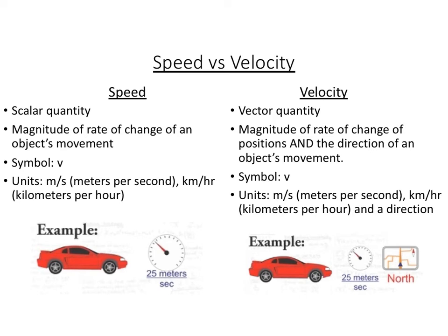Okay, so here's a comparison of speed and velocity. You see they both have a magnitude, and this is basically, these describe the rate of the change of the positions of the object. So both have a magnitude. Velocity, however, is a vector quantity, and so it also has a direction.